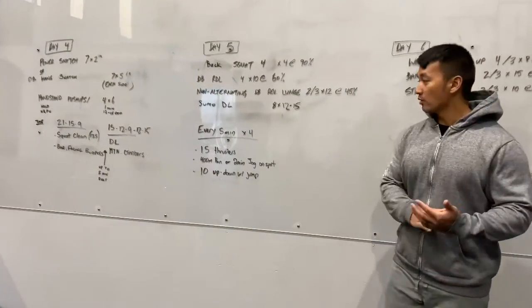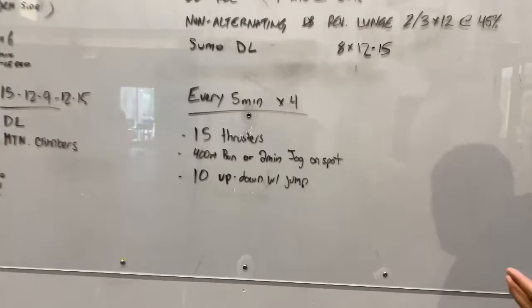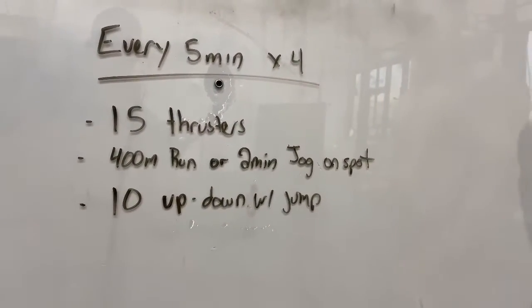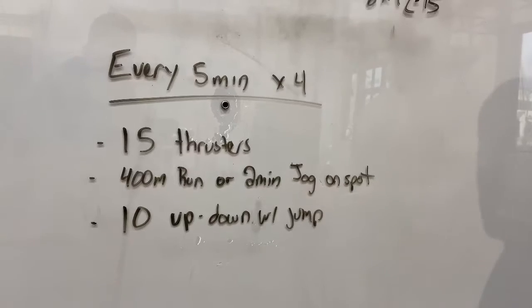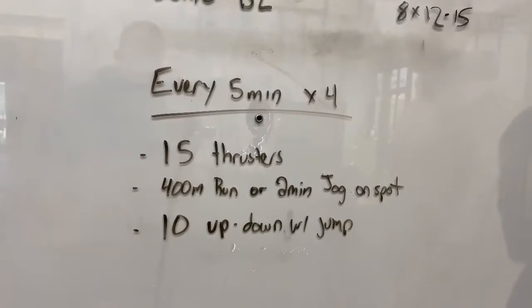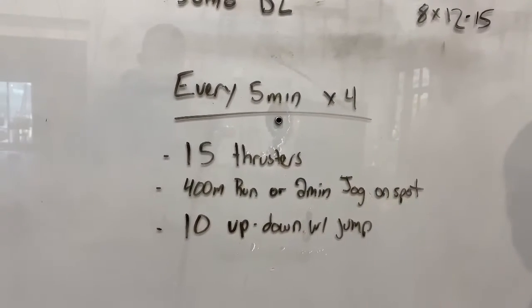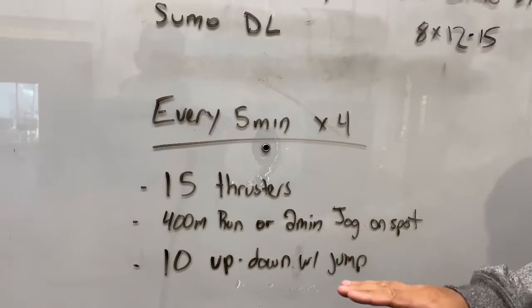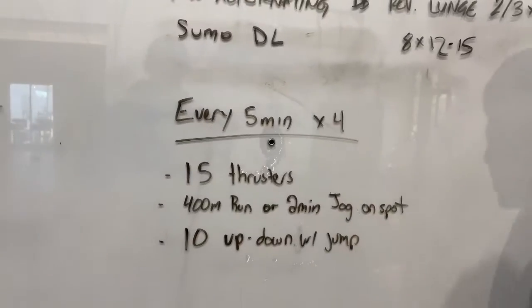Hey guys, so today's one is going to be an EMOM, every five minutes times four. So that's going to be a total of 20 minutes. We have 15 thrusters, 400 meter run or two minute jogging on the spot. After that you got 10 up downs with a jump.